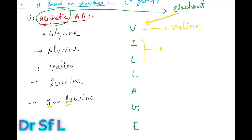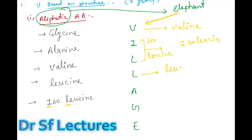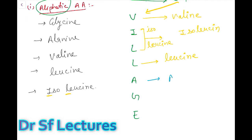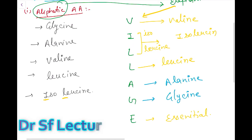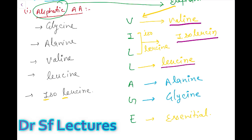In 'VILLAGE': V is for valine, I and L indicate isoleucine and leucine, A is for alanine, G is for glycine, and E is for essential — meaning valine, isoleucine, and leucine are essential amino acids. This is a very easy trick you can remember for a long time.